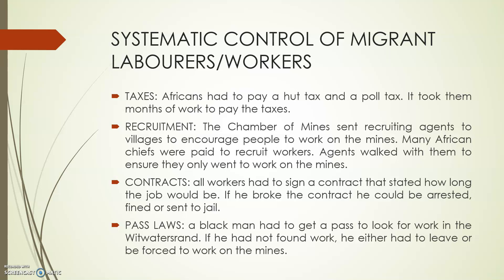Another way they controlled people was through the pass laws. I'm sure you've all heard of the Dompass — this is kind of the precursor to that. It didn't happen immediately in the 1800s but became legalised basically in the 1900s. Black people had to get a pass to look for work in the Witwatersrand, and if he didn't find work, he either had to leave or be forced to work on the mines. All of these methods were how they forced many black people to go and work on the mines.